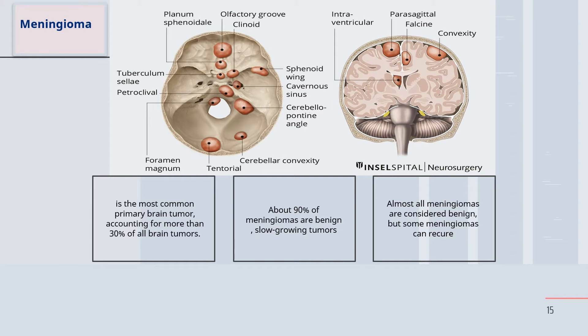Let's start with the types of brain tumors, beginning with meningioma. Meningioma, by its name, arises from the meninges — the meningeal covering inside the brain. It may be peripheral or central, associated with the falx cerebri or any part of the brain surrounded by meninges. Meningioma is the most common primary brain tumor, accounting for more than 30% of all brain tumors.